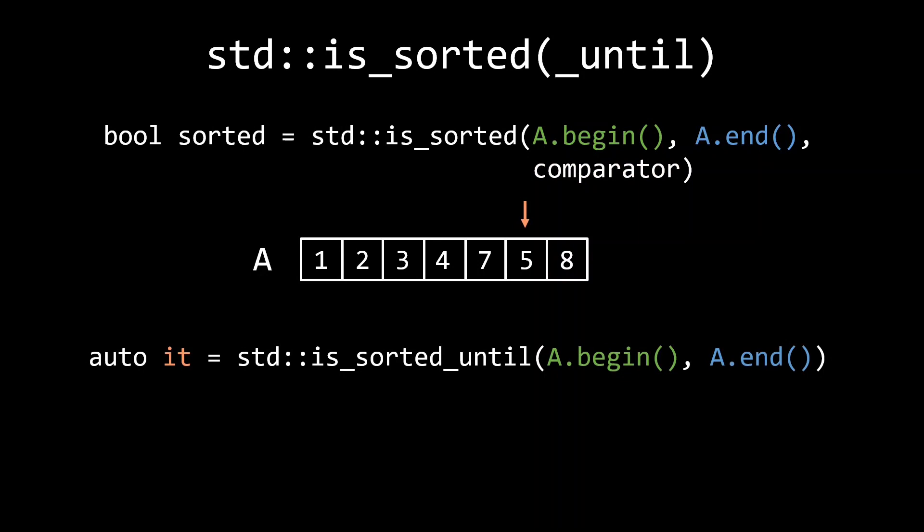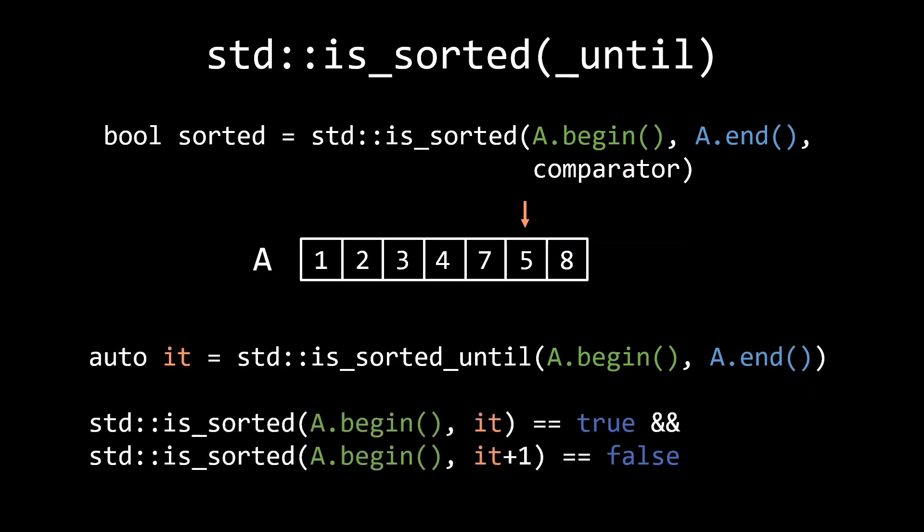In this example, this is the number 5, the first element that is smaller than its predecessor, the number 7. This means that if you take the range a.begin until the iterator returned by is sorted until, you have the largest sorted subrange starting at a.begin. That covers all the sorting-related algorithms in the standard library.